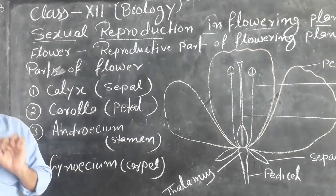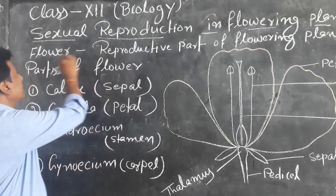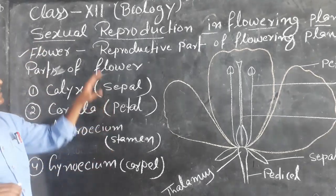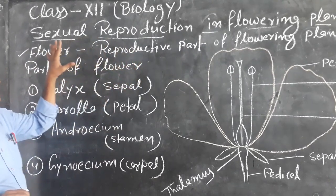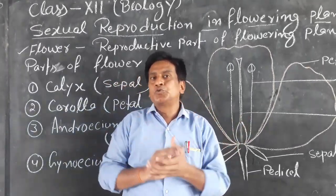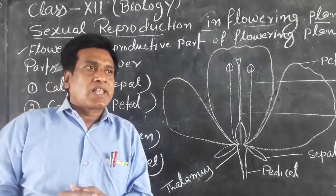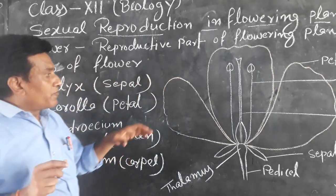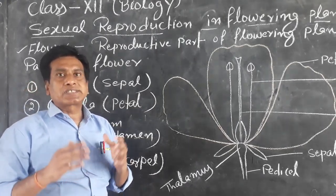The reproductive part of a flowering plant is the flower. Flower is a modified shoot. When the plant gets matured, it produces a flower for sexual reproduction.